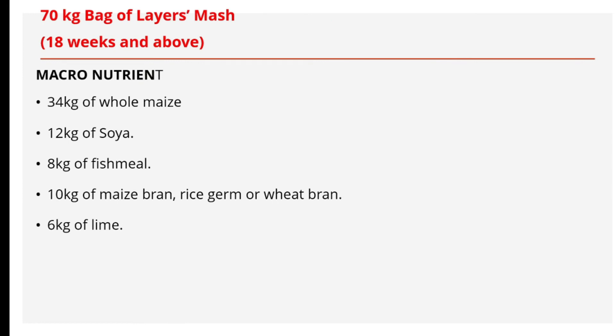Next, we prepare the layer mash for birds 18 weeks and above — the point of egg laying. At 18 weeks, you may expect around 10 percent of the birds to have started dropping eggs; you don't expect all birds to start at the same time. Layers feed should contain a digestible crude protein between 16 and 18 percent, and the feed should contain calcium — lime — for the formation of eggshells. You can see that the quantity of lime is very significant in the layer mash formula.